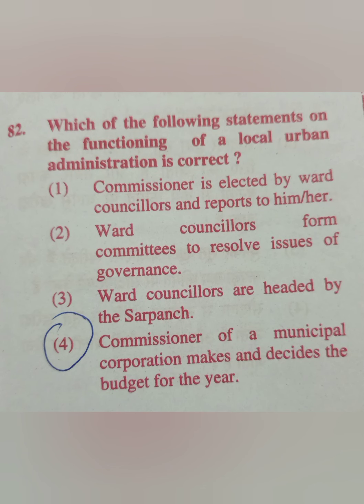Question 82: Which statement on the functioning of urban administration is correct? Option 1: commissioner is elected by ward councillors. Option 2: ward councillors form committees to resolve issues of governance. Option 3: ward councillors are headed by the sarpanch. Option 4: commissioner makes and decides the budget. The correct answer is option 2 — ward councillors form committees to resolve issues of governance.